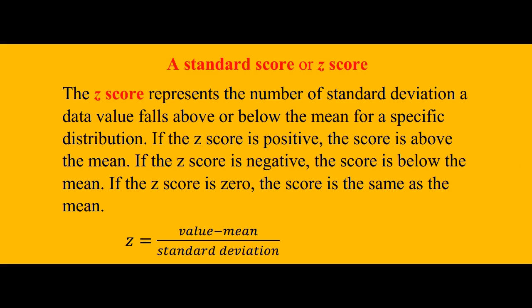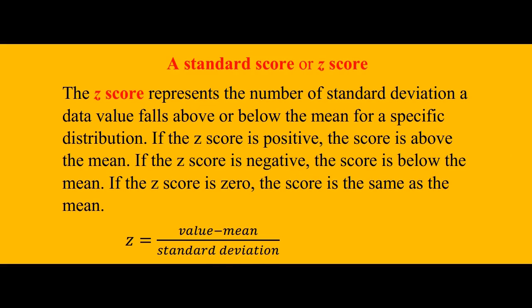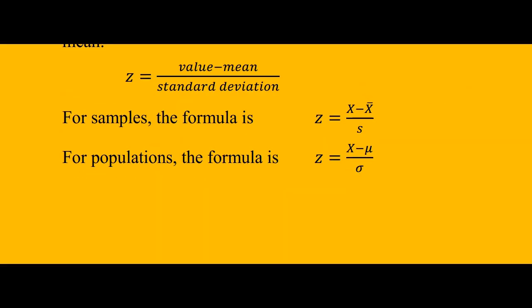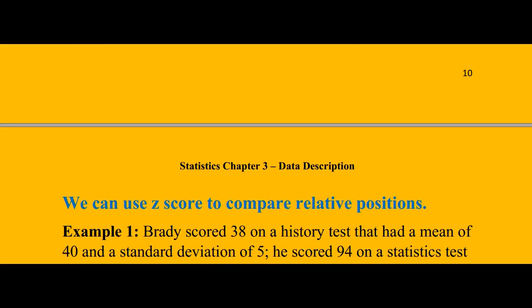If the z-score is zero, then the score is the same as the mean. To calculate the z-score, we just take the value, subtract it from the mean, so we are finding how far it is from the mean, and then we divide it by the standard deviation. If it's for a sample, we use the sample formula for mean and standard deviation. If it's for a population, we use the mean for the population and the standard deviation for the population.